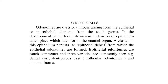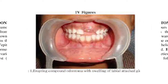Odontomes are cysts or tumors arising from the epithelium or mesothelial elements from the tooth germ. In tooth development, downward extension of epithelium forms the enamel organ; clusters of this epithelium persist as epithelial debris from which epithelial odontomes are formed. Three varieties are commonly seen: dental cyst, dentigerous cyst, and adamantinoma.